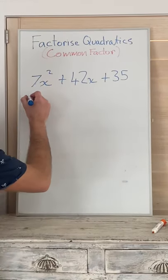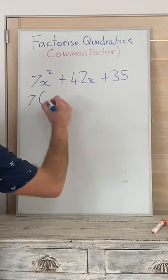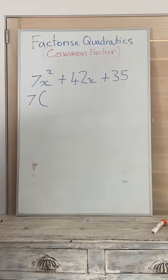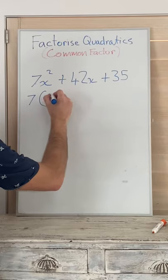So the first thing we're going to do is put it outside the brackets. How many times can 7 go into 7? Well, only once.